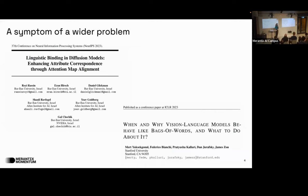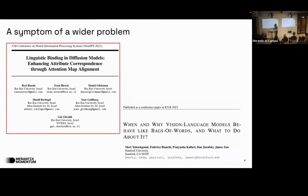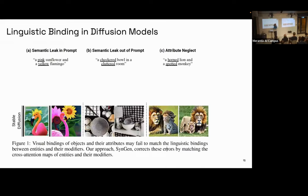This might seem like a niche problem, but others have encountered it too. At NeurIPS I found a poster looking into this matter and suggesting a theory to address it at inference time. I also went down a bit of a spiral thinking about why this is a problem in the first place — that's the second paper I'll briefly discuss: linguistic binding in diffusion models.